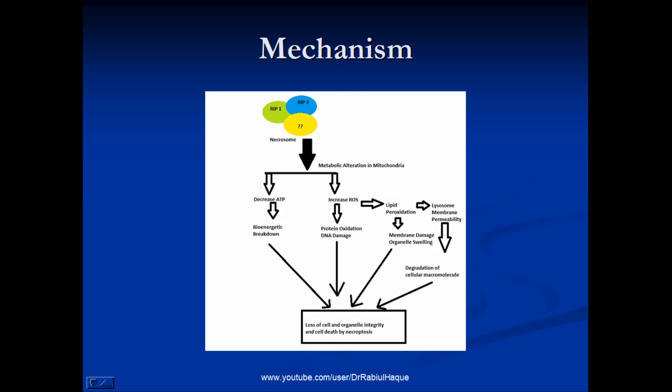Also, whenever there is metabolic alteration in the mitochondria, there will be increased production of reactive oxygen species. Now one thing you have to remember, small amount of reactive oxygen species normally are produced during mitochondrial respiration. However, they are also removed by the cell's scavenging system.